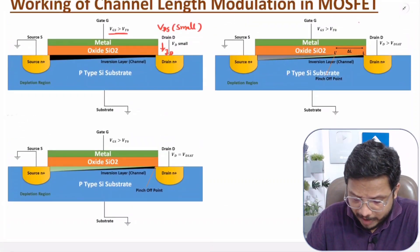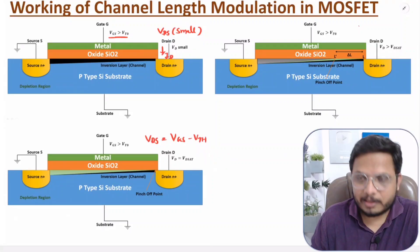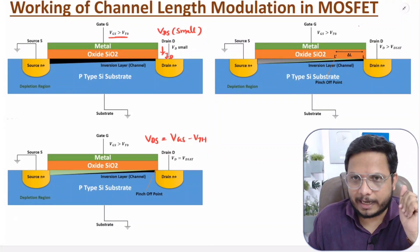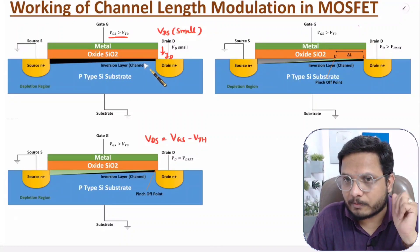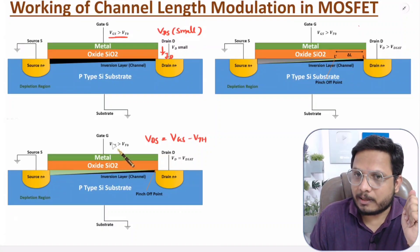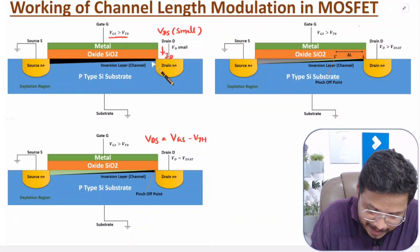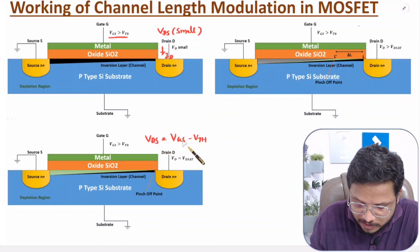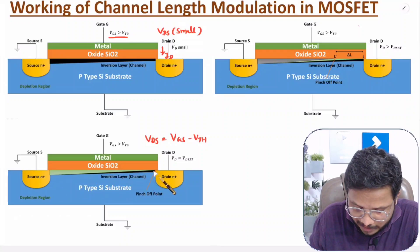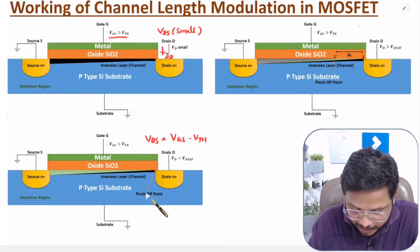The saturation voltage value is VDS_sat = VGS minus VTO. The channel formation occurs because of the gate voltage being higher than the threshold voltage — channel forms due to the additional voltage VGS minus VTO. When you apply drain-to-source voltage equal to VGS minus VTH, the channel becomes a point at the drain terminal, which is referred to as the pinch-off point, marking the saturation voltage.